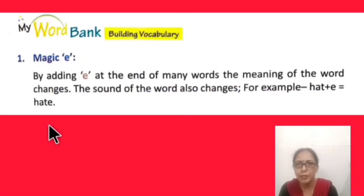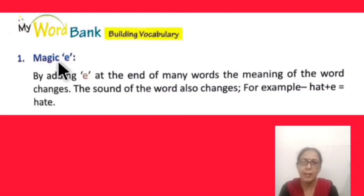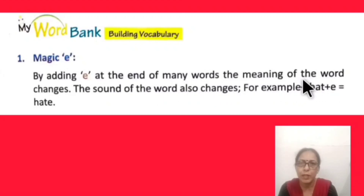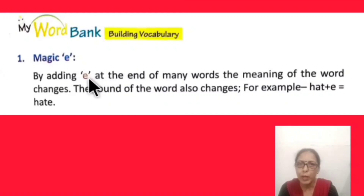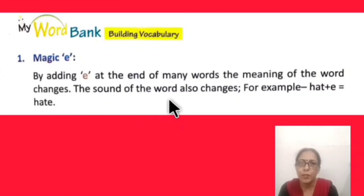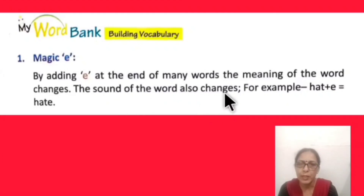Page number 31, My Word Bank — Magic E. The magic of the letter E. By adding E at the end of many words, the meaning of the word changes. There are many such words where if you add the letter E at the end, the meaning changes, and the sound of the word also changes. For example, H-A-T: 'hat' — which you wear on your head. When E is added at the end, the spelling becomes H-A-T-E. The word becomes 'hate,' the sound changes and so does the meaning. Hate means 'nafrat' — bad feelings towards someone.